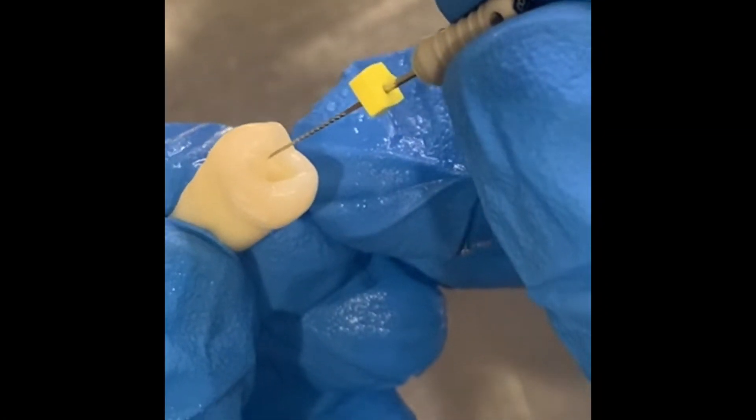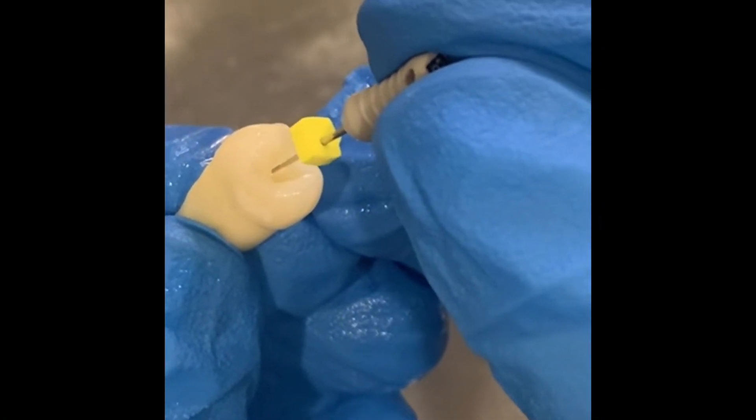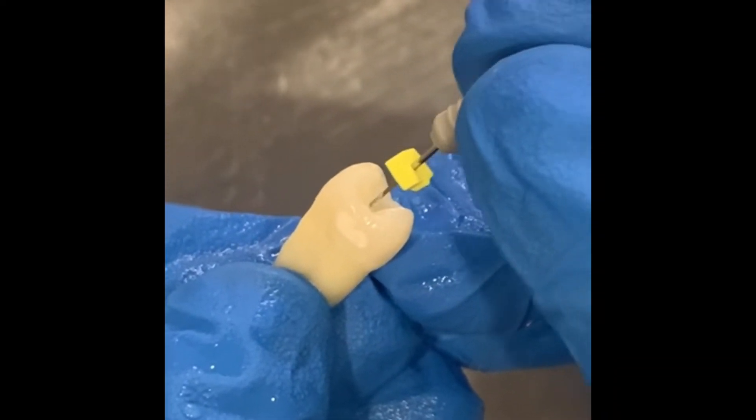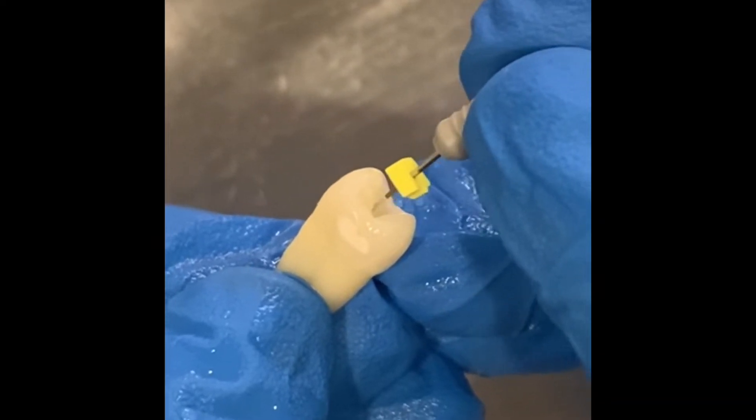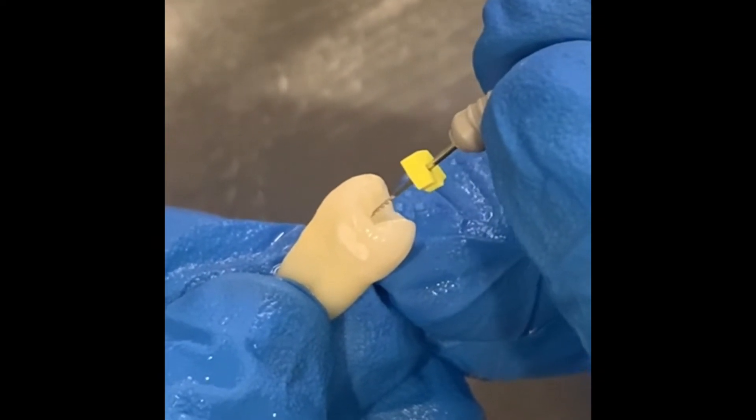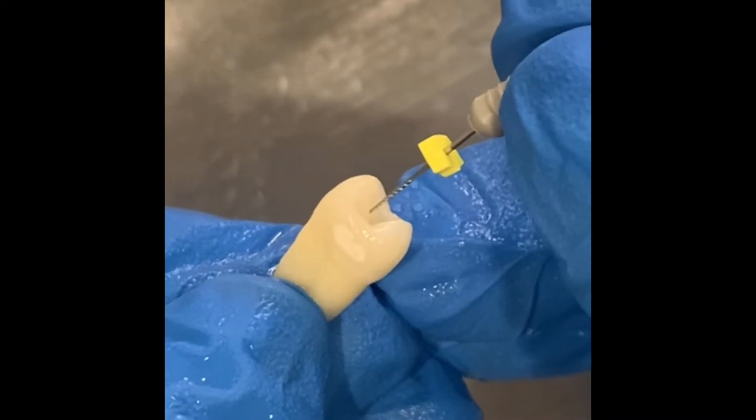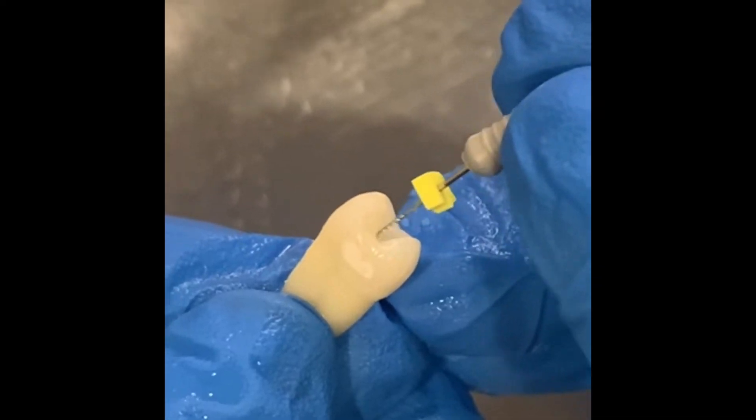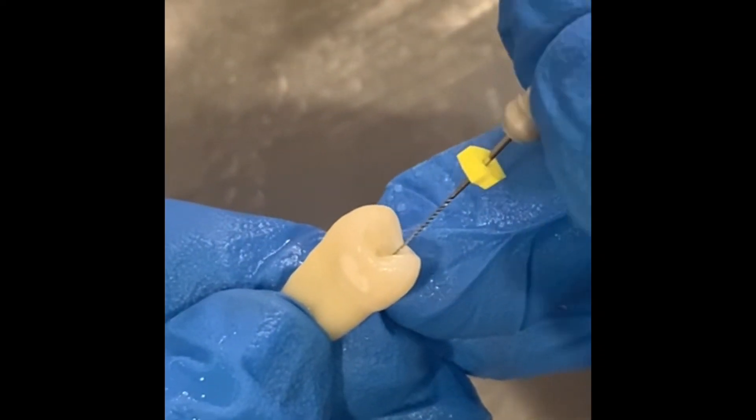Patency filing is done with a 6, 8, or 10 number file. It's basically negotiating the canals to be able to reach the apex easily. By patency filing, the clinician is able to understand the nature of the canal - its curvatures, constrictions, calcifications, etc. Basically the clinician gets the feel of the canal.